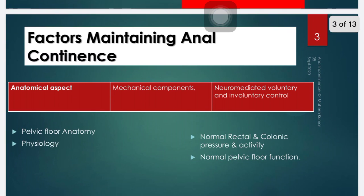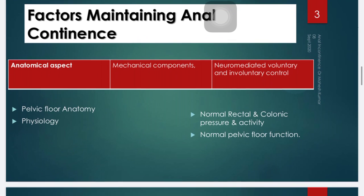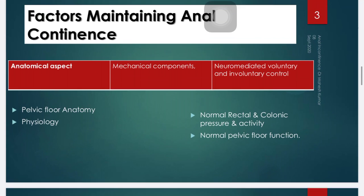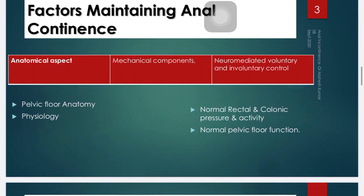The first factor is maintaining anal continence. Anal continence is maintained through three aspects: anatomical, mechanical components, and neuro-mediated voluntary and involuntary control. The pelvic floor anatomy has a specific role in managing continence. Normal rectal and colonic pressure, activity, and normal pelvic floor function are responsible for maintaining continence in the anal region.